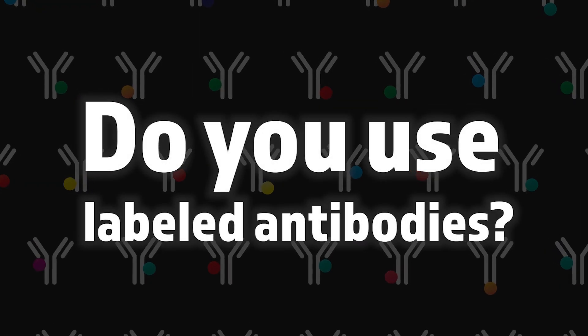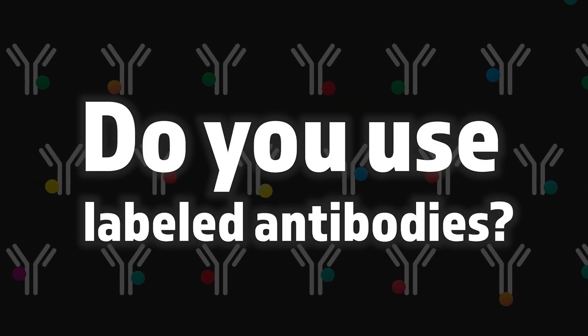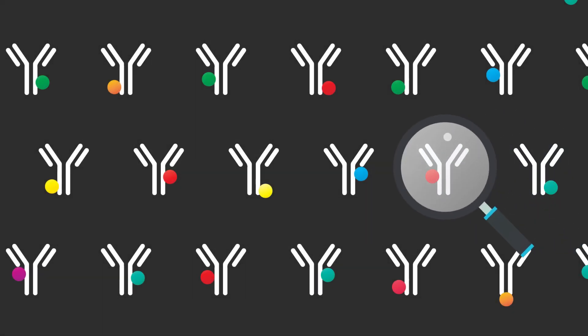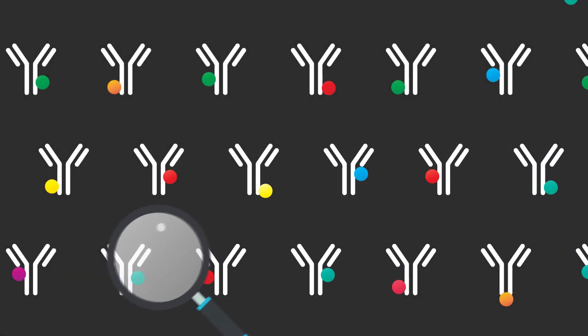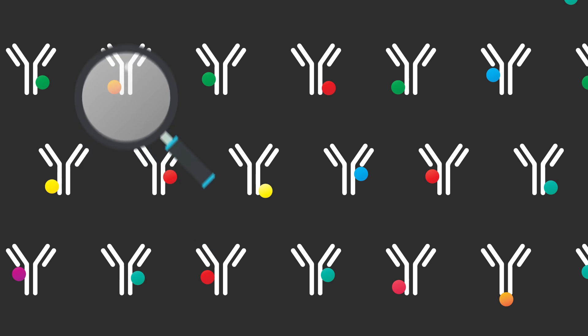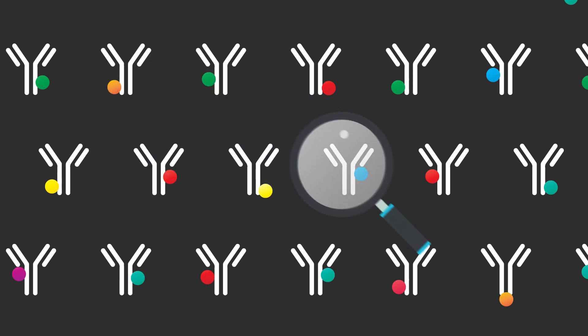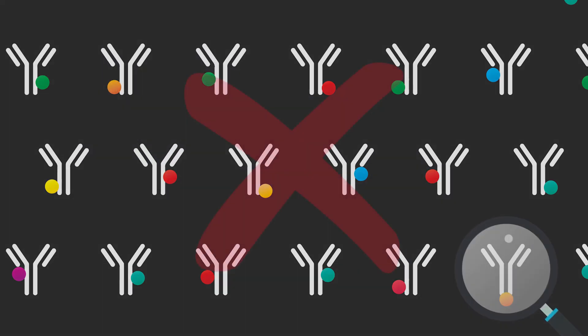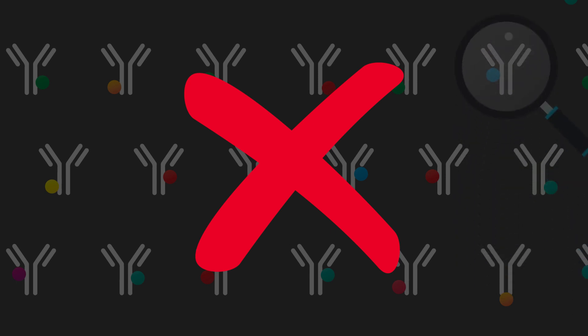Do you use fluorescent antibodies in your research? Then you may have found yourself searching for specific primary antibodies with the right labels for your experiment. But if the labeled antibody that you want isn't commercially available, what do you do?